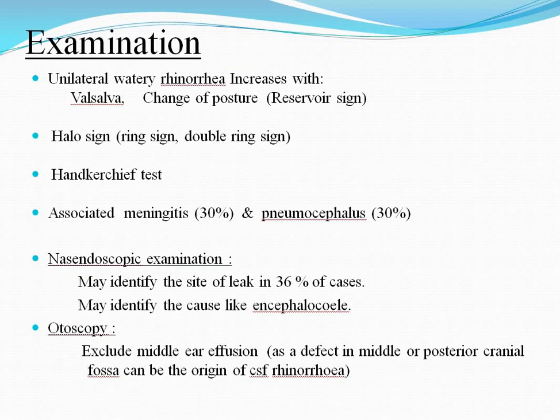In examination: the reservoir sign and the halo sign. In the reservoir sign, unilateral watery rhinorrhea increases with the Valsalva maneuver and change in posture. The halo sign — also called the ring sign or double ring sign — and the handkerchief test. Associated meningitis in 30% and pneumocephalus in 30%. Nasoendoscopic examination may identify the site of the leak in 36% of cases and may identify the cause such as an encephalocele. Otoscopy excludes middle ear effusion, as a defect in the middle or posterior cranial fossa can be the origin of the CSF rhinorrhea.